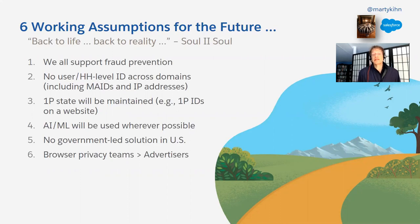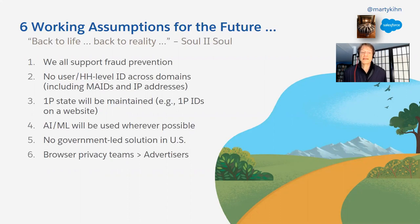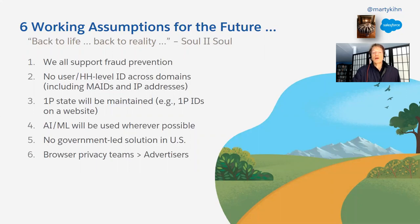Number three, first-party state will be maintained somehow. If somebody arrives on your site and logs in, in that session there's got to be some state maintained or else the internet is going to break. Number four, AI and ML wherever possible — artificial intelligence and machine learning has got to be enabled everywhere. Number five, no government-led solution in the US. I'm somewhat cynical about the ability of government to legislate in the US — we can't look for governments to solve this for us. And number six, the browser privacy teams right now have the upper hand. Advertising is on defense, but the future is now — the discussions are very active.